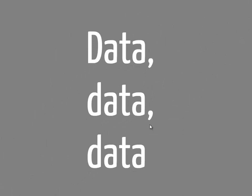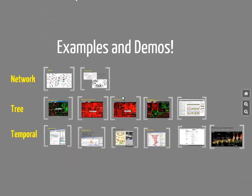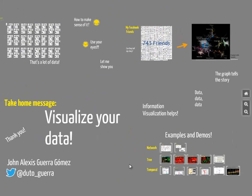The problem is this is just my Facebook friends, but we keep generating more and more data, and society is facing bigger and bigger problems. The good news is that information visualization helps — I have tons of examples and demos showing how InfoVis is helping now and how by 2020 people can use it to make sense of their daily life data. If you vote for me, I promise to show many of these examples. My take-home message: just visualize your data, and you will be able to start understanding and making sense of it. Thank you very much.